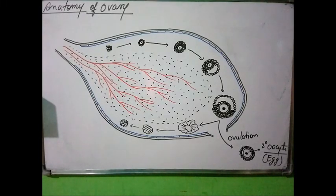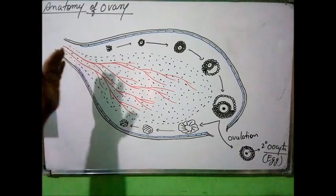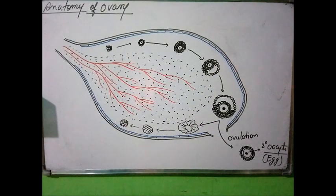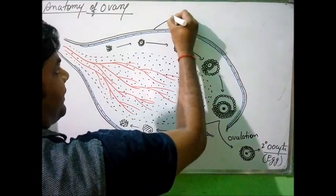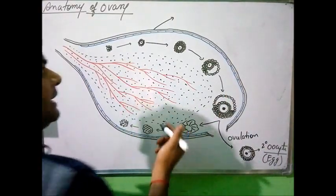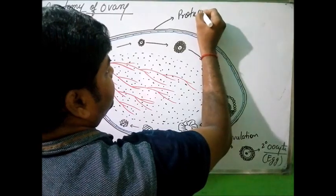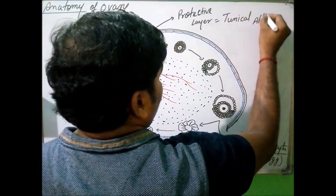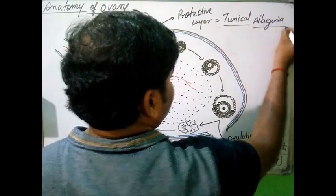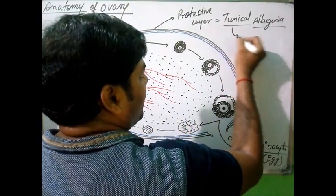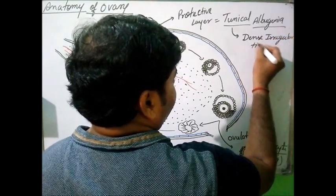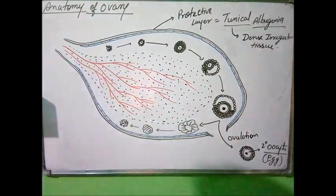The ovary is an oval structure with a small stalk. When cutting a longitudinal section of the ovary, we can see different zones internally. The outermost protective covering of each ovary is called the tunica albuginea, which is similar to the testis tunica albuginea and is made up of dense irregular connective tissue.